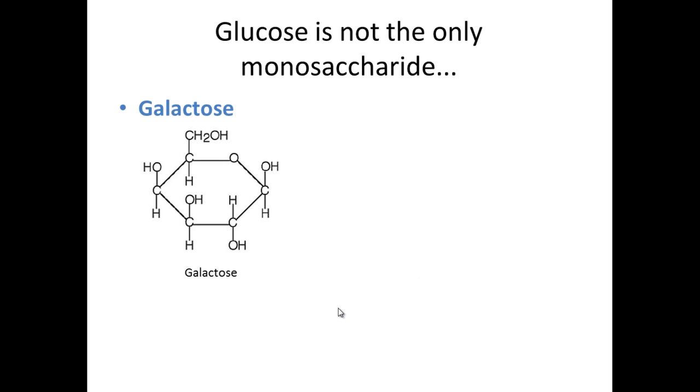Another type of monosaccharide is called galactose. Due to the shape you can see it's hexagonal, therefore a six carbon sugar, and that can actually join to glucose and forms the disaccharide lactose.